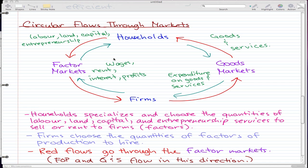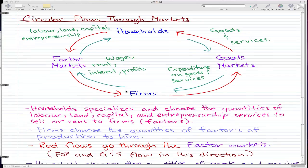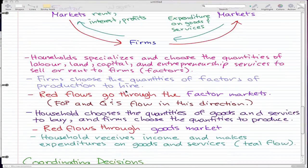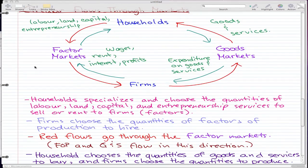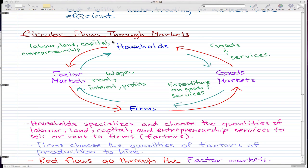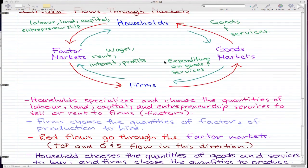And from that money, they will pay their wages, pay their rent, pay the interest and profits that the firm generates to the households or to the common people like you and I, among other things that the money goes to. And yeah, that's pretty much what I want to talk about for the circular flows through markets. And I hope you really understand that.